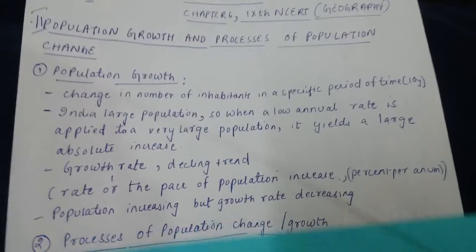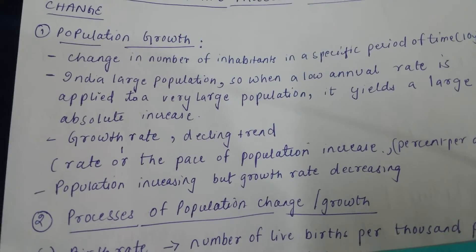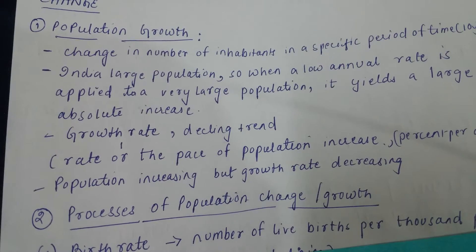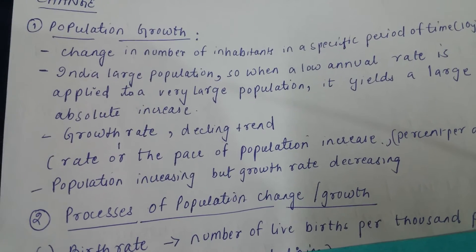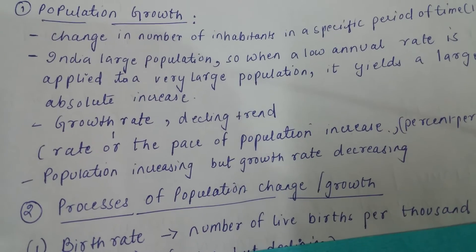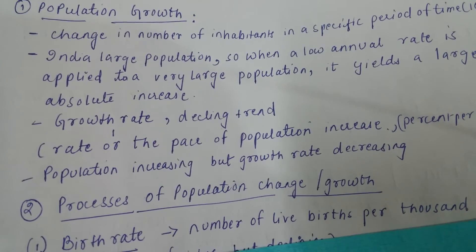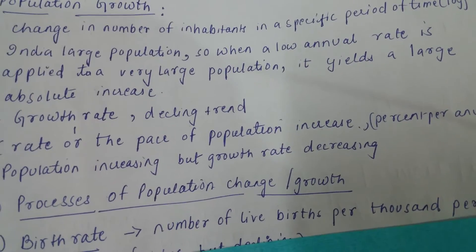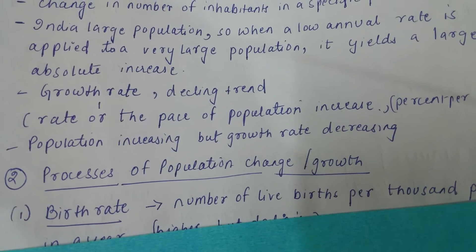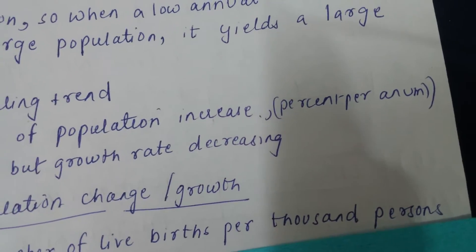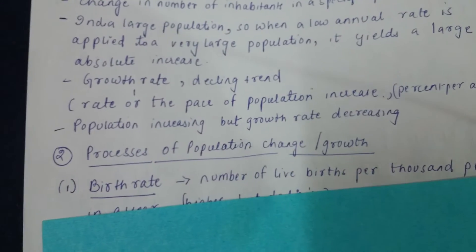Despite India's rate of population growth decreasing, the absolute increase is still increasing. For instance, in 1981, 2001, and 2011, population was increasing each time, but the rate of growth or speed has definitely decreased in 2001 and 2011 compared to 1981. So the pace of population growth is decreasing, but the population as a whole is increasing. Growth rate is the rate or pace of population increase, calculated as a percentage per annum.